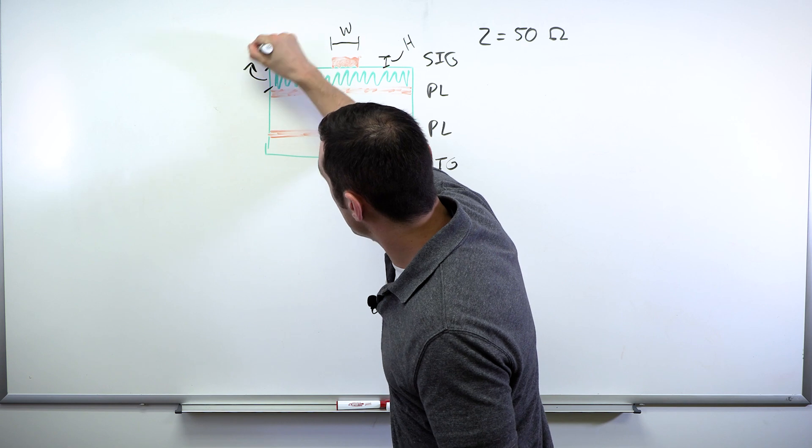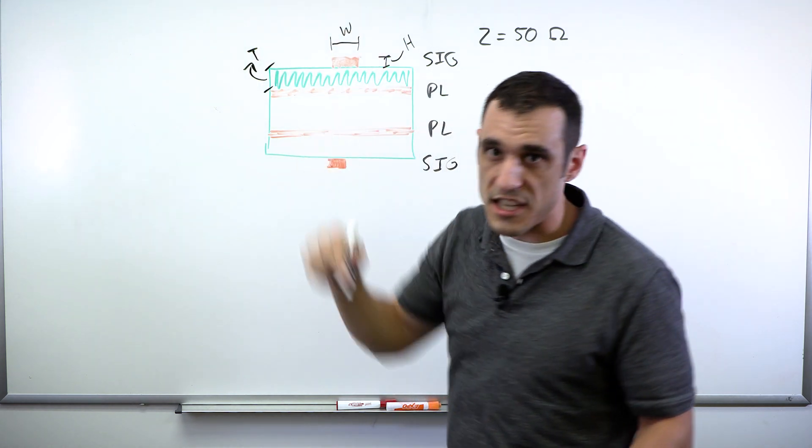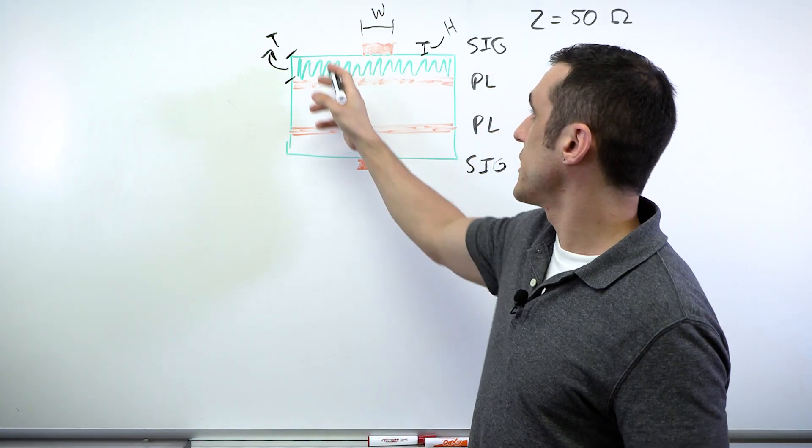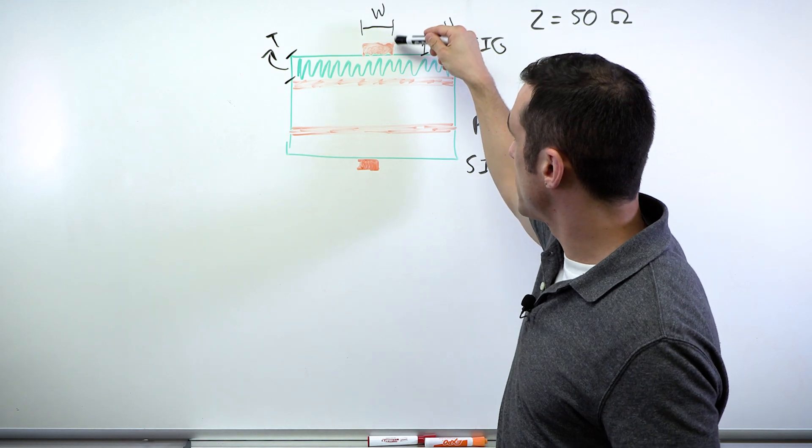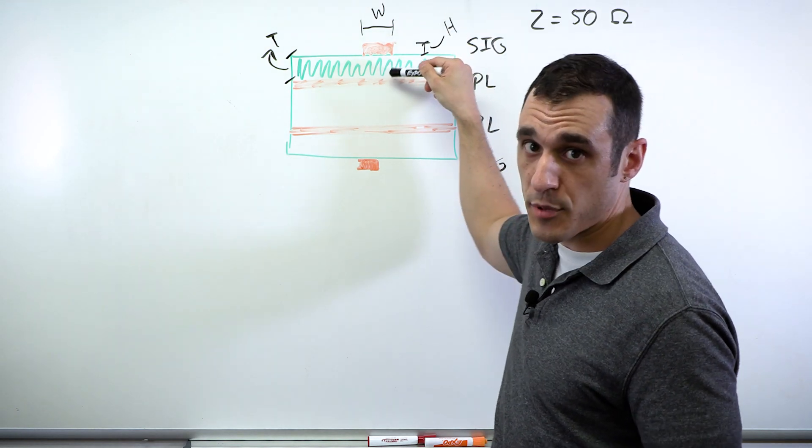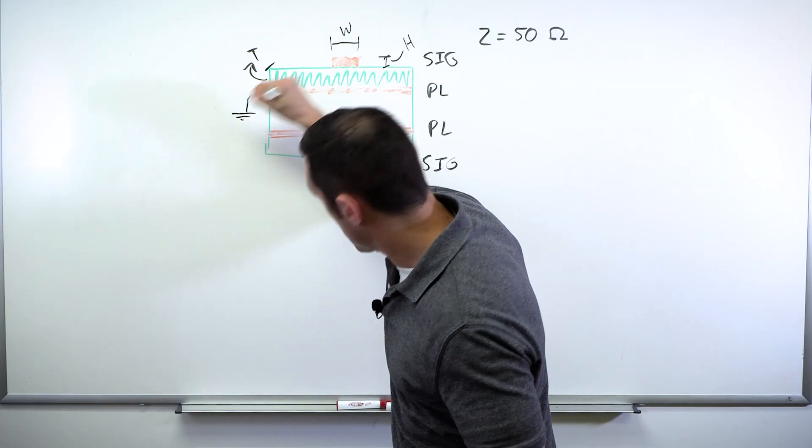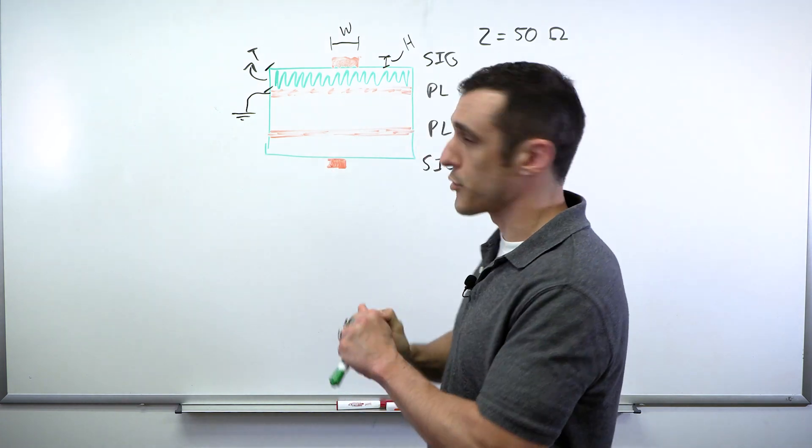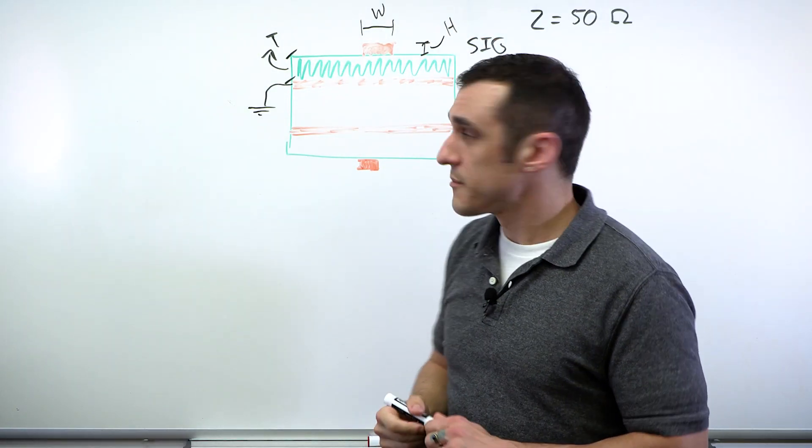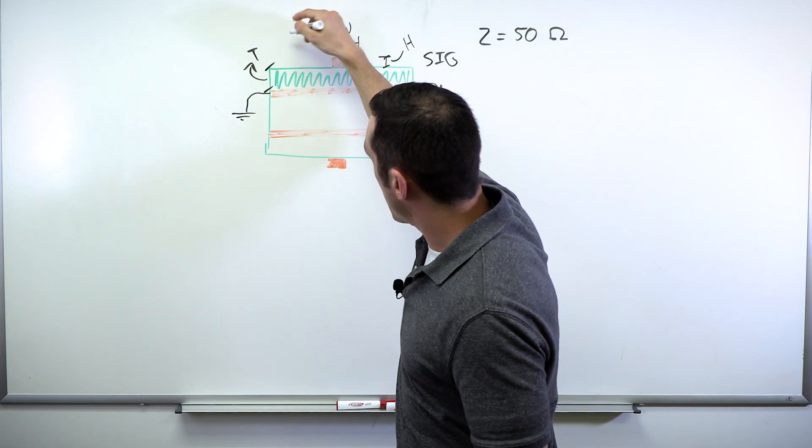Next is this layer thickness. Let's just call it T for the moment. So this layer thickness is the thickness between the signal trace and the reference plane. So this reference plane here is grounded. We'll just say it's ground for now. So you have these two geometric parameters.